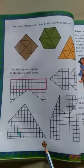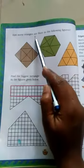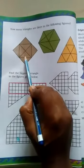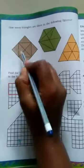Now see. Look at page number 62. How many triangles are there in the following figure? Look at this. There are three figures. In the first figure let's count how many triangles are there.